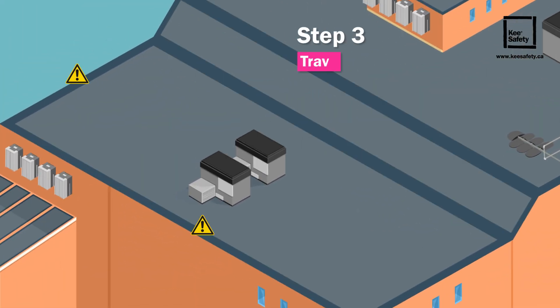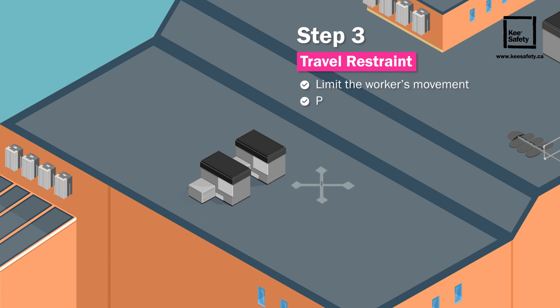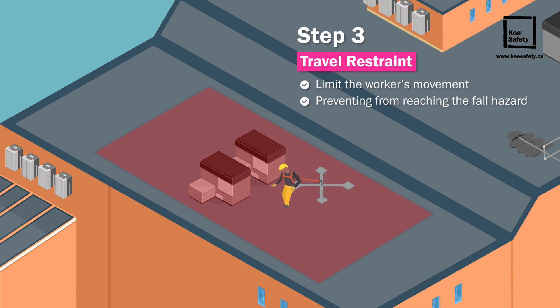Step 3: Travel restraint, also known as fall restraint or work restraint. Active travel restraint systems limit the worker's movement, preventing them from reaching the fall hazard. While using equipment like full body harnesses and lanyards, and connecting to an anchor point or horizontal lifeline, workers can safely move within a designated access zone.